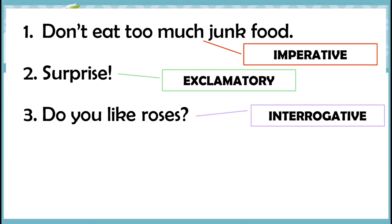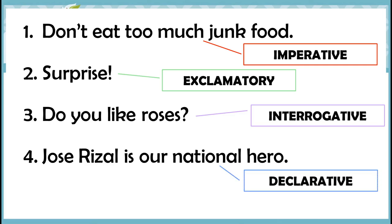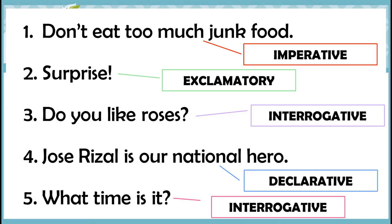How about this one: "Jose Rizal is our national hero." This is a declarative sentence — it makes a statement that Dr. Jose P. Rizal is our national hero. Last: "What time is it?" Since this sentence asks a question, it is an interrogative sentence.